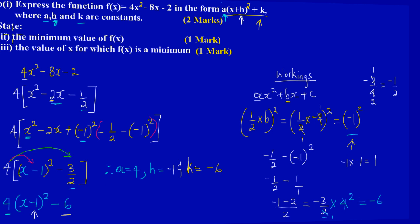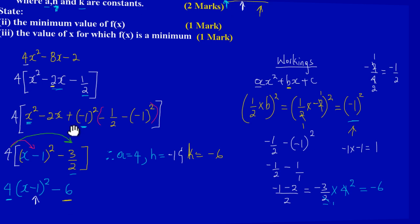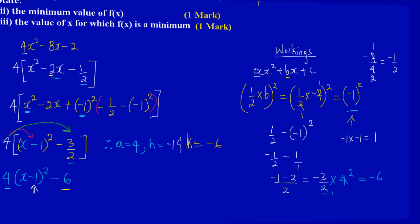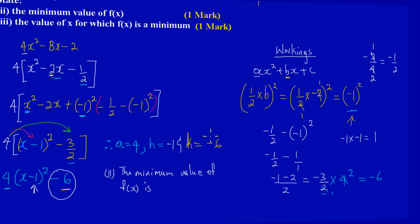Moving on to part 2 — they're asking us to state the minimum value of f(x). The minimum value of f(x) is the constant term that sits outside the squared bracket, which is the same as k. So the minimum value of f(x) is -6.